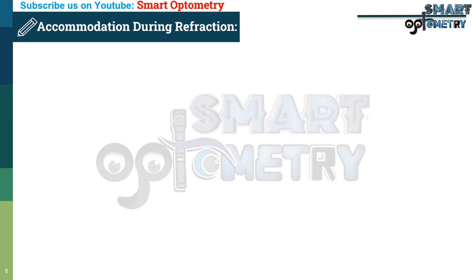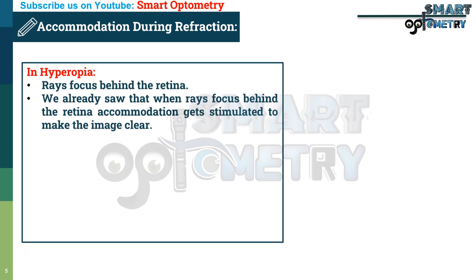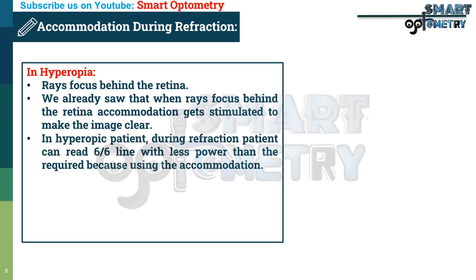Now let's see how accommodation can affect refraction. In hyperopia, rays focus behind the retina. We already know that when rays focus behind the retina, accommodation gets stimulated to make the image clear. So in a hyperopic patient during refraction, the patient can read the 6/6 line with less power than required because they are using accommodation.